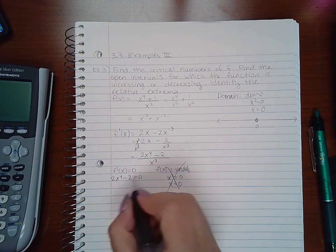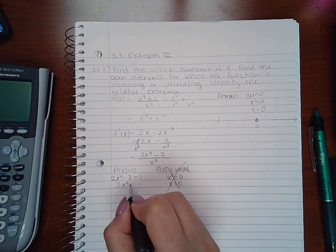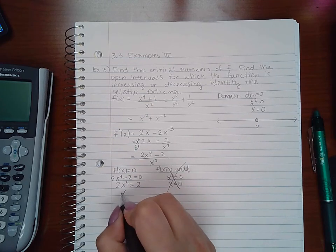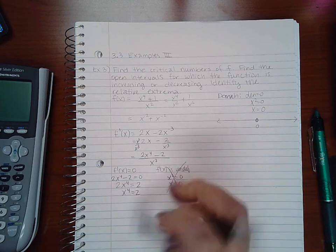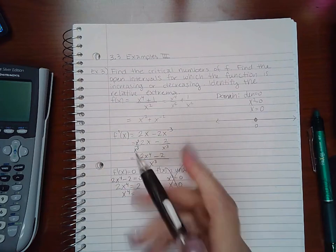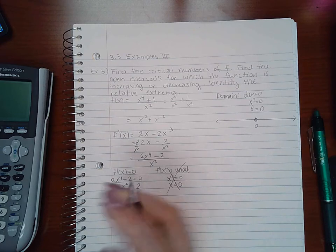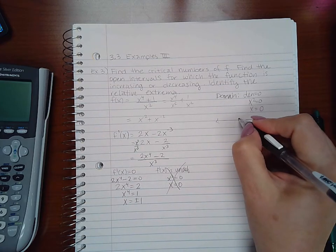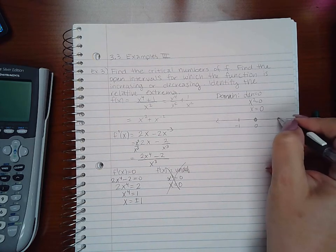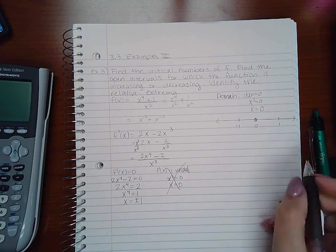From setting the derivative equal to zero, I add 2 to both sides, divide by 2, and take the fourth root of both sides, giving plus or minus 1. On the number line, I have negative 1 to the left of 0 and positive 1 to the right of 0.